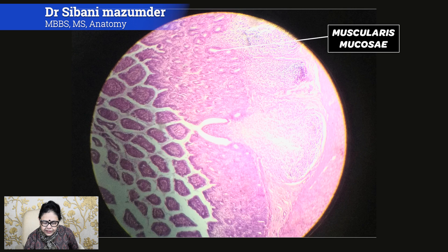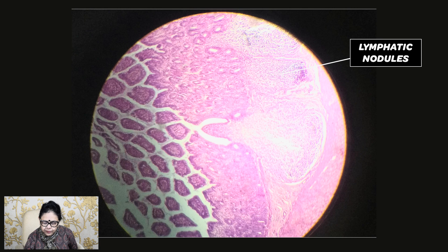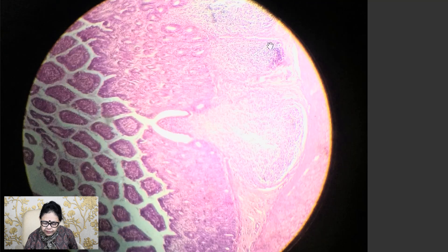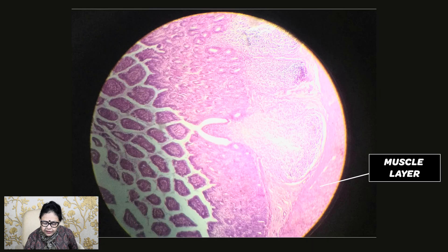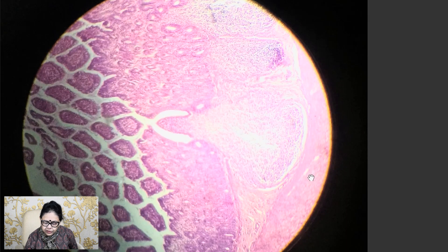Between the muscularis mucosae and the submucous tissue — this is the submucous tissue — and in the small intestine, the number of lymphatic nodules is more, so you will see large lymphatic nodules in the submucous core. This is the muscle layer: the inner circular and outer longitudinal.